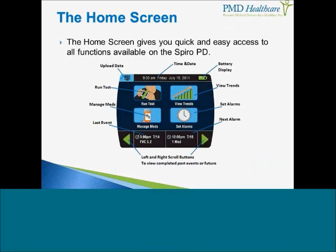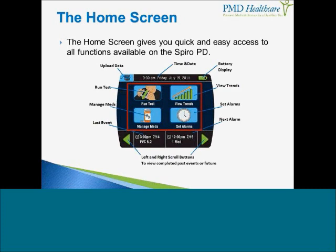This is what the home screen looks like. Everything that you need to do with SpiroPD — all the functions — are available on the home screen. At the top left you have your upload data button, which is what you'll click when you want to upload your data to the computer or send an email to your doctor. You also have your time and date and battery display. The middle section includes your run test button, manage medications key, view trend button, and the button to set alarms. In the bottom section you can see the left and right scroll buttons, which you'll use to view completed past events and also future events.